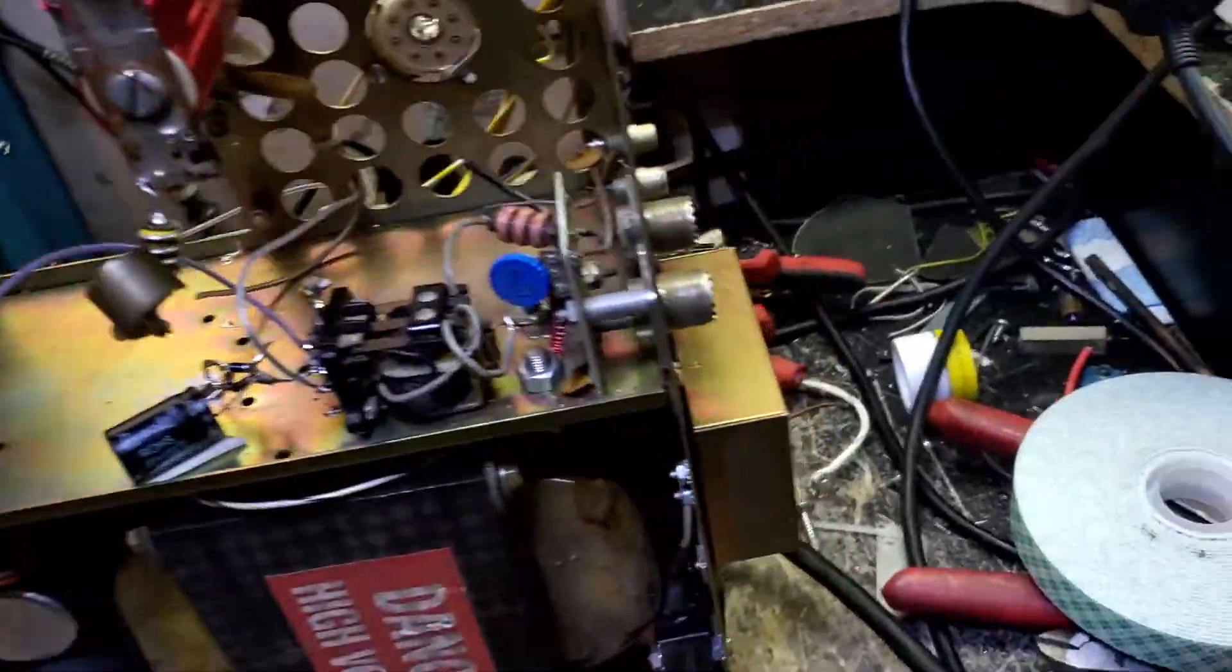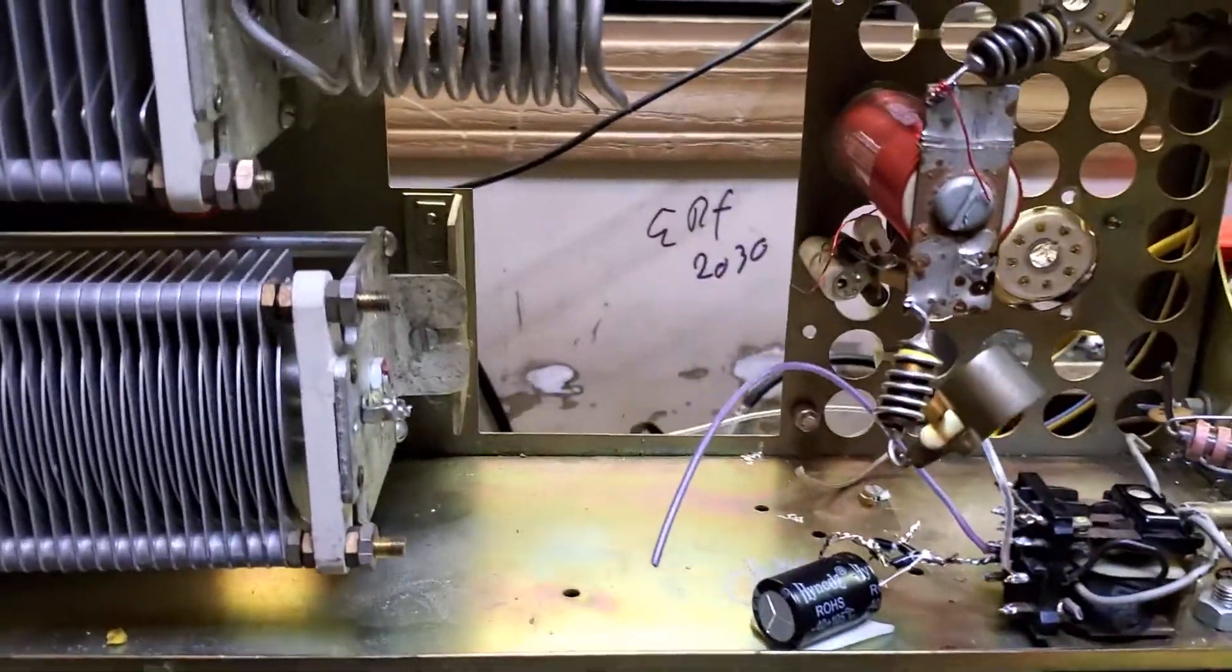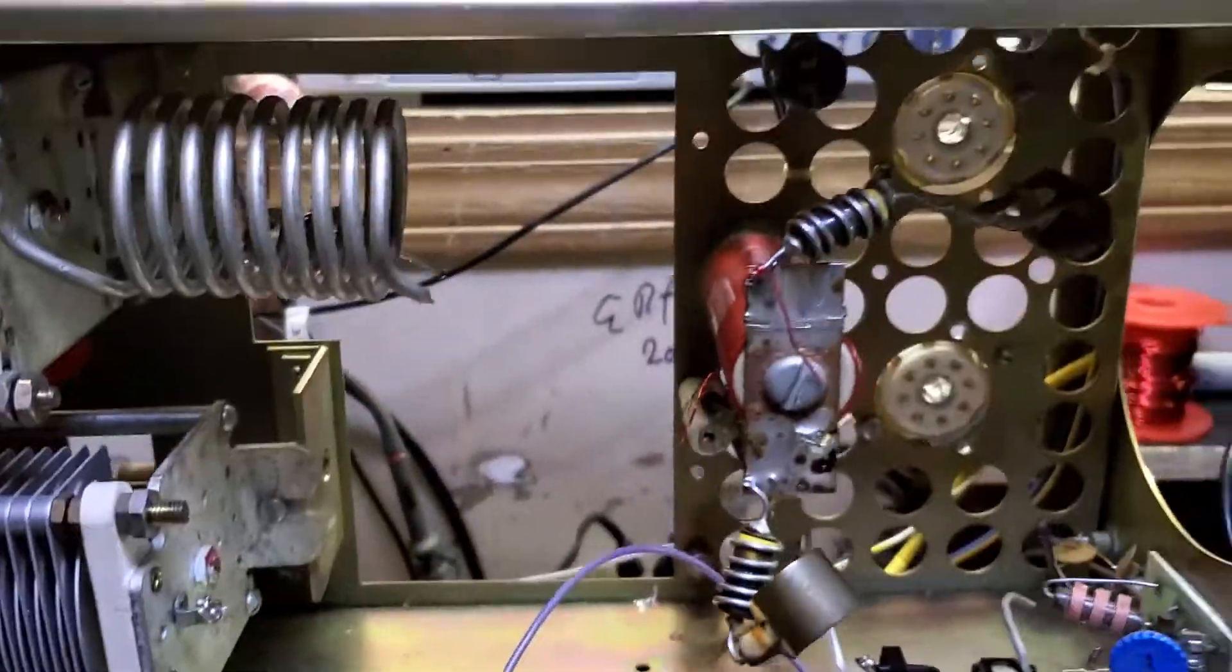Okay, here we go again. This is where we're at. This is our Dentron we're converting. Like I told you the last video, the tubes are no longer available for this and the ones you can find are ridiculous.